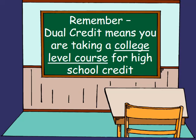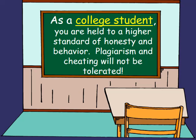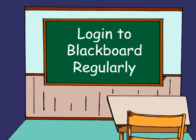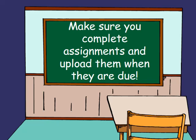What are my expectations? First, remember that dual credit means you're taking a college-level course for high school credit — not a high school course for college credit. Treat the course syllabus as if it were your Bible; it is the contract between myself and you as individual students. As a college student, you are held to a higher standard of honesty and behavior — plagiarism and cheating are not tolerated. Log into Blackboard regularly, keep up with all assigned reading weekly, and make sure you complete and upload assignments when they are due.